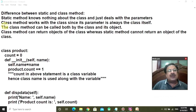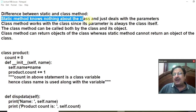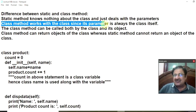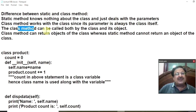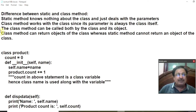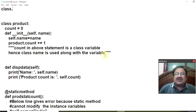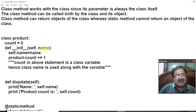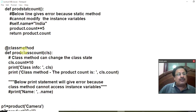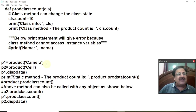Now, to understand the difference between static and class method, I have made a program that is a bit bigger but includes both static method and class method. The static method knows nothing about the class. The class method knows everything about the class because the CLS parameter is passed to it. The class method works with the class since its parameter is always the class itself. Class method can be called by both class and object. But the main difference is that the class method can return an object of the class, whereas the static method cannot. This program has a parameterized constructor, an instance method DispData, a static method ProdStatCount, and a class method ProdClassCount.